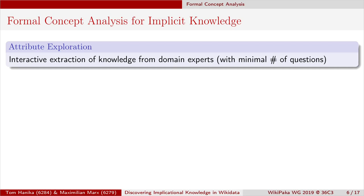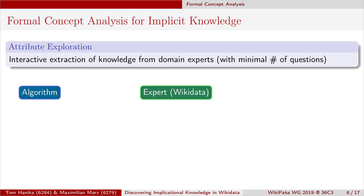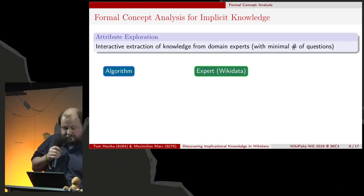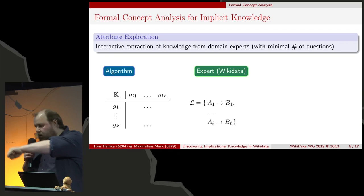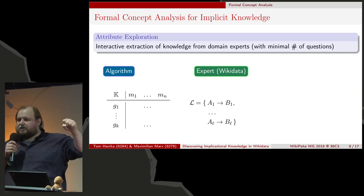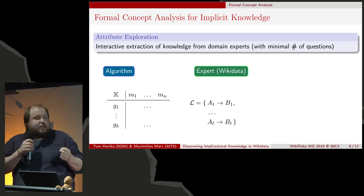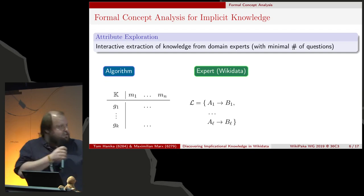Wikidata is an expert you can query using the SPARQL interface. You can ask: is there an example for that? Is there a counterexample for something else? The algorithm keeps notes for counterexamples and valid implications. In the beginning, we have no valid implications and no counterexamples, so both lists are empty.